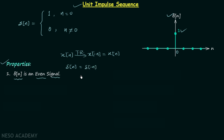This means if we perform the time reversal of delta[n] we should get the same signal. In time reversal we simply flip the signal waveform about the y-axis. If you look at this plot and flip the waveform about the y-axis, you will find you have the same signal. Therefore delta[n] equals delta[-n], confirming that delta[n] is an even signal. This is all for property number 1.